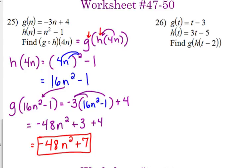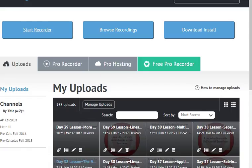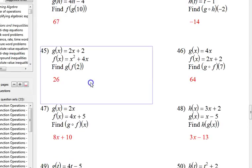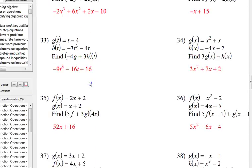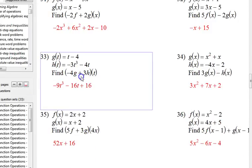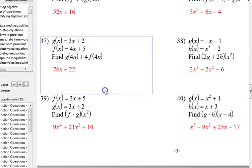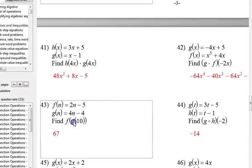So as opposed to the problems that we were doing at the very beginning, like here, yes, we have two functions, but they're not directly beside each other. So it's negative 4 times g plus 3 times h. They're separated there. In these examples, they're right side by side. So you know you're going to have to plug in twice.